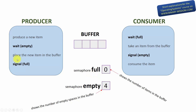Let's take a look at the producer first. It produces an item and then wants to place it in the buffer. It can place the new item in the buffer only if there is at least one empty space. The number of empty buffer spaces is indicated by the value of the empty semaphore, so the producer waits for the semaphore empty. If empty is greater than zero, it means there is a place for the new item, allowing the producer to proceed and place it in the buffer. By doing so, the producer decreases the number of empty spaces by one — and that is already taken care of, because the wait function automatically decreases the semaphore value by one.